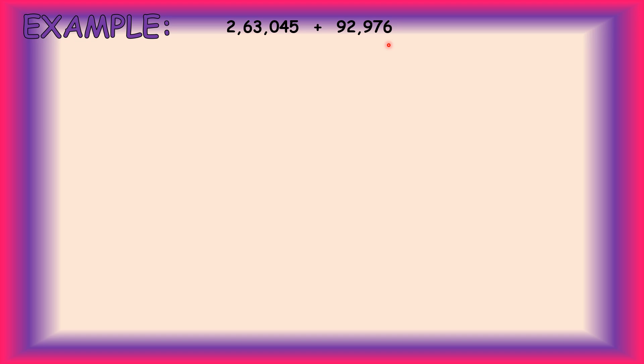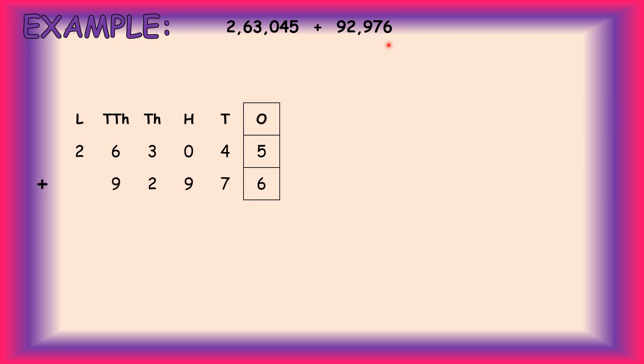Let's take one example of addition with a large number. Our problem is 2,63,045 plus 92,976. For adding large numbers, we prefer writing the addition statement vertically. We always start placing numbers from the right-hand side, that is from the ones column. First, we place the digits of each number according to their place value from right to left.